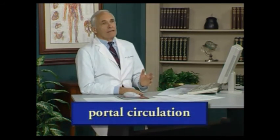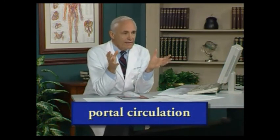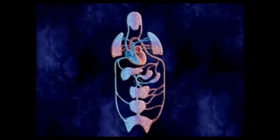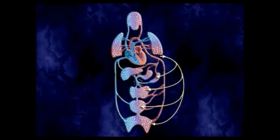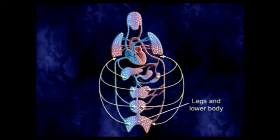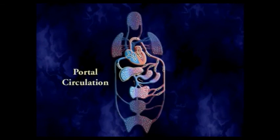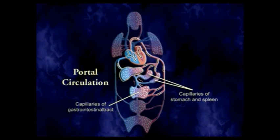I haven't talked about the portal circulation yet. All the models so far have had blood flowing from the arterial side into an arterial capillary bed and then onto the venous side. The portal circulation is different: it's where one venous system at the capillary level joins with another venous system, rather than arterial to venous capillaries. The major one is through the liver, where blood comes from a specific set of digestive organs.